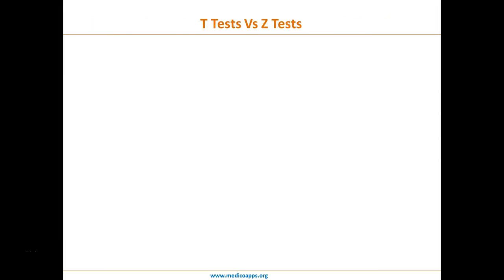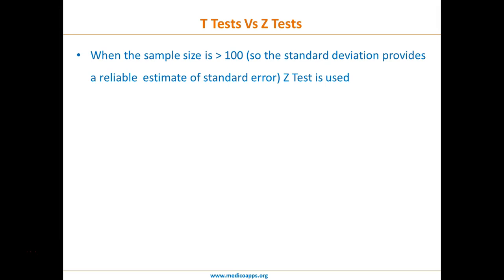Finally, what is the difference between a t-test and a z-test? When the sample size is greater than 100, the standard deviation provides a reliable estimate of standard error, so the z-test is used. The t-test and z-test use essentially the same formula; the difference is that the t-test is used for smaller sample sizes, while the z-test is used when the sample size exceeds 100. With this, we end this module on hypothesis testing.